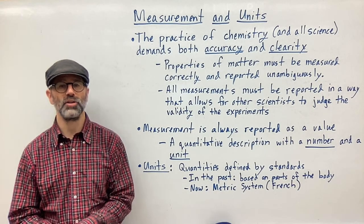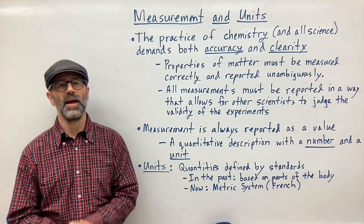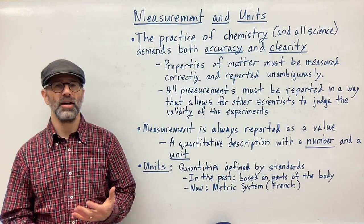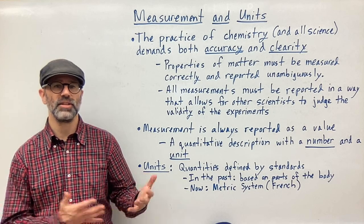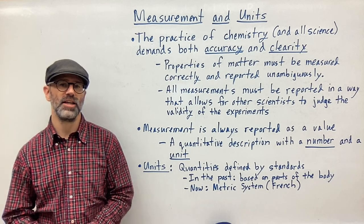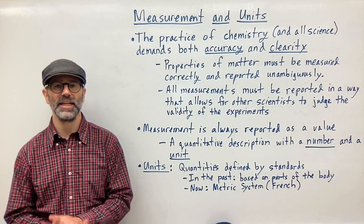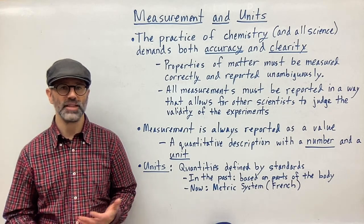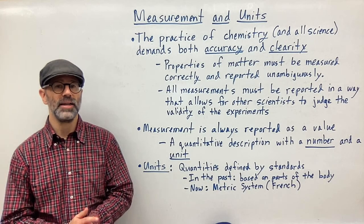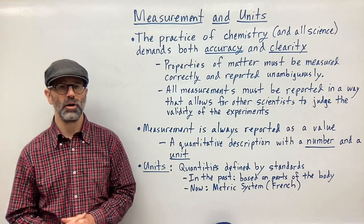So now we have what is called the metric system, which was developed by the French. As the name implies, it is based on the meter. The unit of meter used to be based on the ten-millionth of the distance from the north pole to the equator, but nowadays the definition of a meter is based on the speed of light — specifically, the distance that light travels in a vacuum in a given fraction of a second. The metric system is what we use in science today to report our values to other people so they can check our data and experiments.